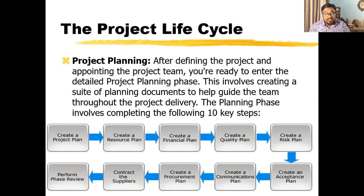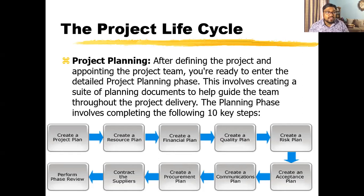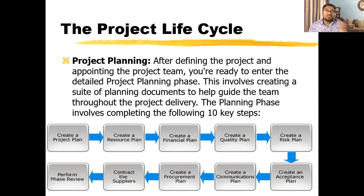Create an acceptance plan — the terms and conditions that need to be satisfied to accept the project. Then create a communications plan; nowadays we use a multi-channel communication plan. Create a procurement plan — how you will procure machinery, materials, and technology. Contract the suppliers and finally perform a phase review, because a good plan means 50% of the project is done. Review whether you are on the right track.